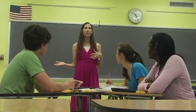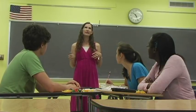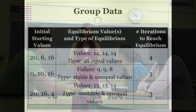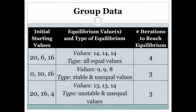To facilitate discussion following the activity, you can have a member from each group record the following information on the board: initial number of candies for each student in their group, final number of candies, the equilibrium values, the type of equilibrium, and the number of iterations to reach that state. The students can record the collective information on their tally sheets.